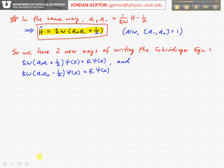So we have these two new ways of writing the Schrödinger equation, which we just discussed, and that's basically where we left off the last time. So what exactly does this do for us?